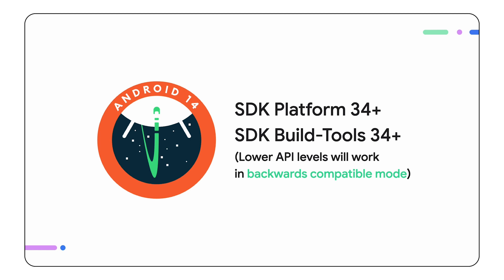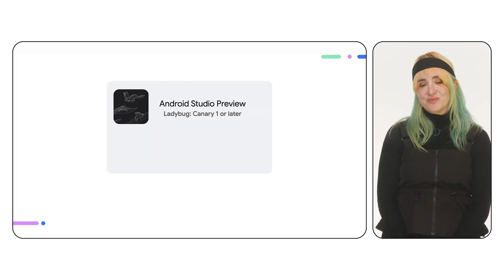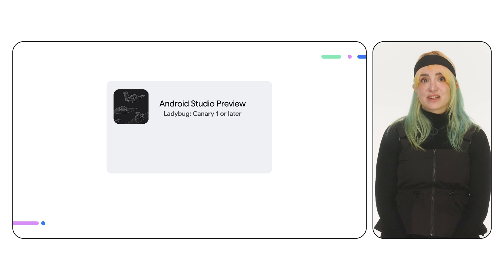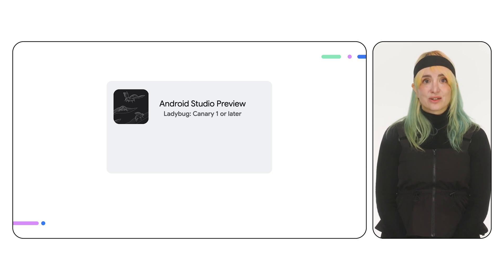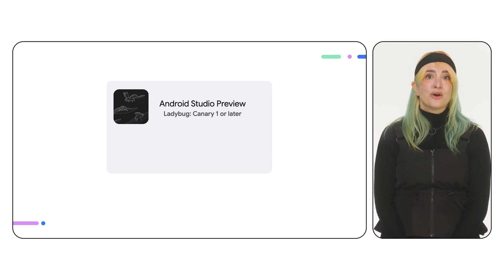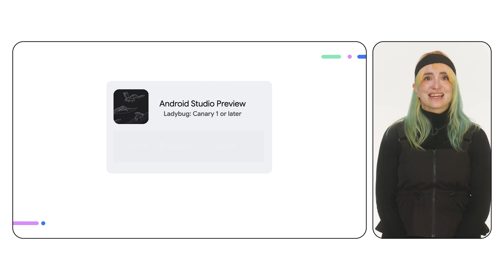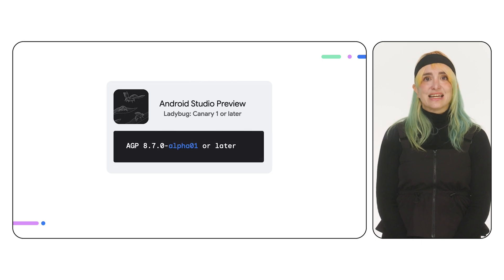Lower API levels will still work, but in backward compatible mode. If you want to develop a runtime-enabled SDK, you will have to do so on Android Studio Preview. Specifically, you need to use Ladybug Canary 1 or later, which is needed to access AGP 8.7.0-alpha-01.